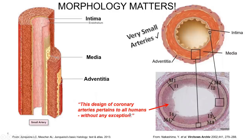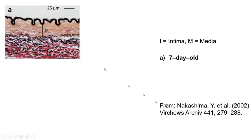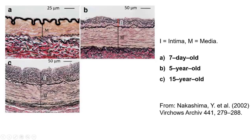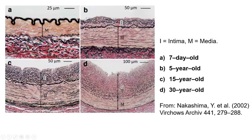Looking at Subotin's slides: a seven-day-old has a very thin intima, really just an endothelium, with the media relatively much thicker. At five years old the intima is thickening naturally and physiologically. At 15, the intima is almost as thick as the media. At 30 years old, the intima is actually bigger than the media — a natural process where the intima becomes a dense cellular compartment that grows much bigger than the media.